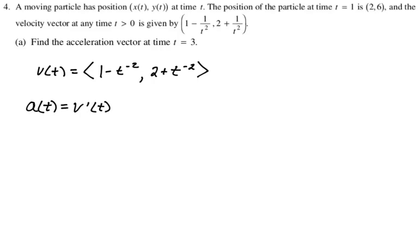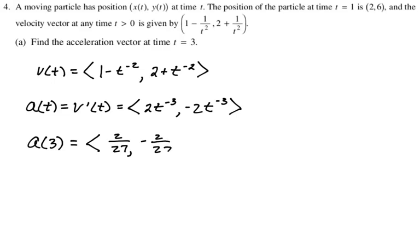So now we're supposed to say that a of t is the derivative of that. So a of t is v prime of t. And now it's power rule each component. So the derivative of 1 is 0, bring the negative 2 down, we get positive 2t to the negative 3rd. And then the derivative of 2 is 0, bring the negative 2 down and subtract 1. Now we're supposed to do this at t equals 3, so the acceleration a of 3 is going to be 2 over 27, comma negative 2 over 27. And that's part a.